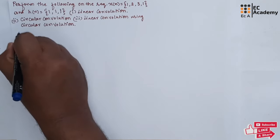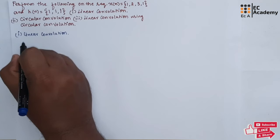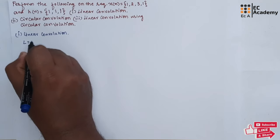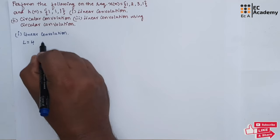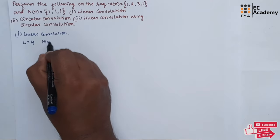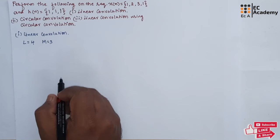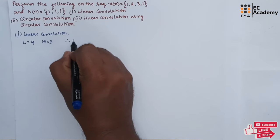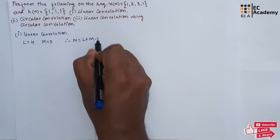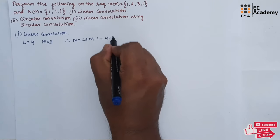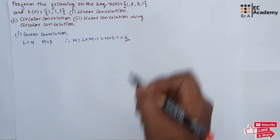First let us perform linear convolution. Let us see the length of the sequence x of n. The length l is equal to 4 because we have 4 samples, and the length of the sequence h of n is 3, so m is equal to 3. Here l represents the length of x of n and m represents the length of h of n. Therefore the number of samples after linear convolution will be l plus m minus 1, which is 4 plus 3 minus 1, that is 6. So once we perform linear convolution we will get 6 samples.